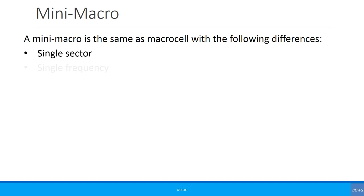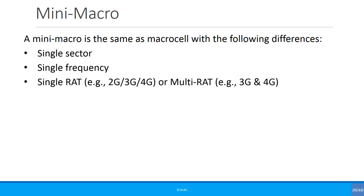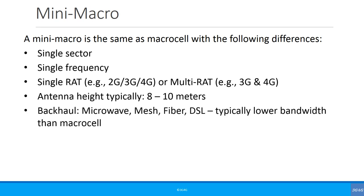A mini macro would generally have a single frequency per technology — so one frequency for 3G and one for 4G. It could be single-RAT or multi-RAT, but nowadays they are generally multi-RAT. Antenna height is less than a macro, typically 8 to 10 meters. Backhaul can be microwave, mesh, fiber, or DSL, but would generally have lower bandwidth than a macro cell.